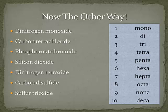Now let's try the other way — converting names to formulas. We have dinitrogen monoxide. We know we have nitrogen and oxygen. Di means we have two nitrogen atoms, so we write the symbol N with a subscript 2. Monoxide means one oxygen atom — since there's only one we don't write the subscript 1, it's assumed. So we have N₂O.